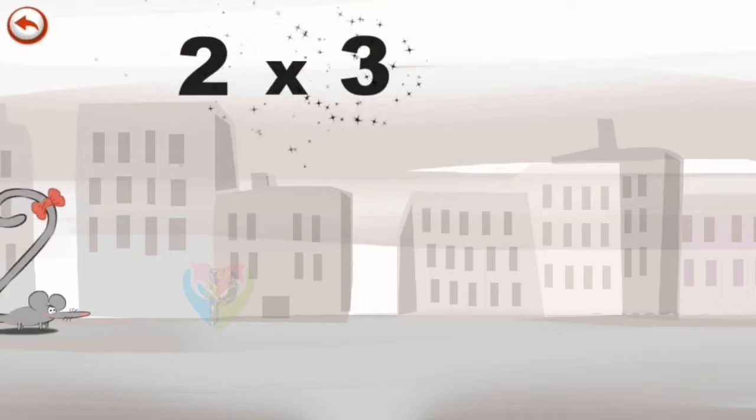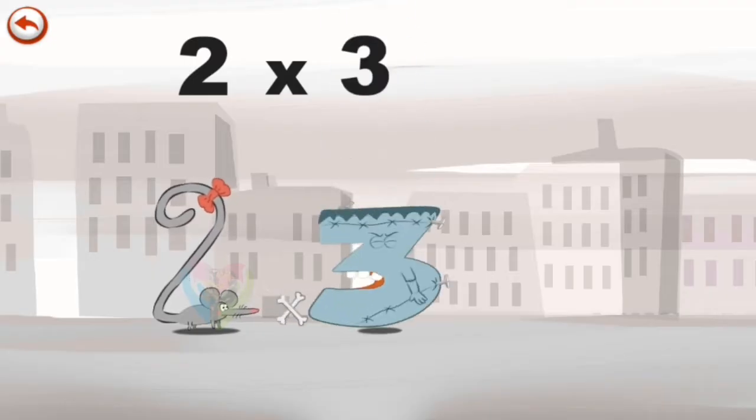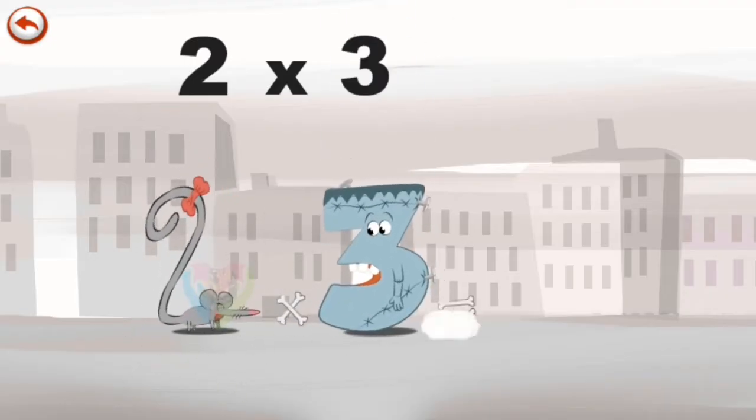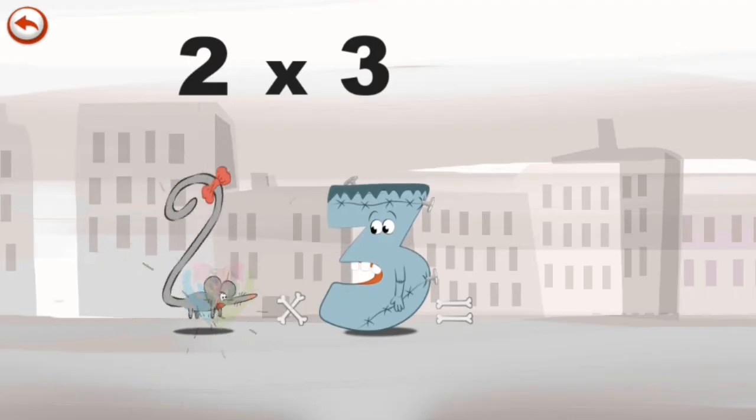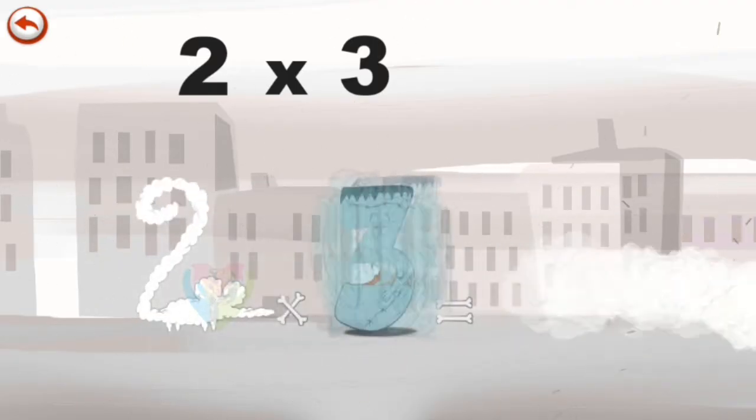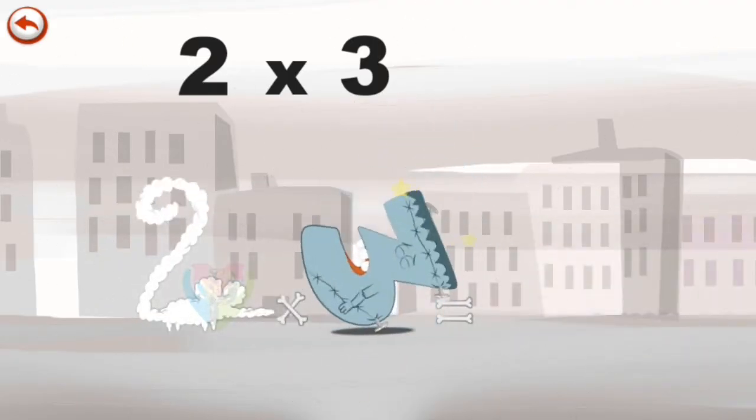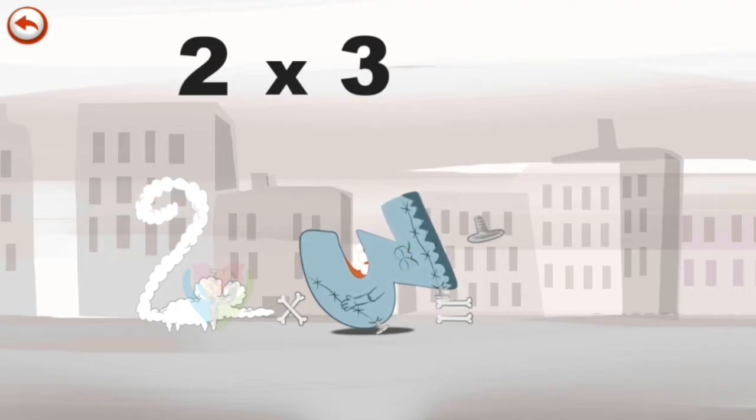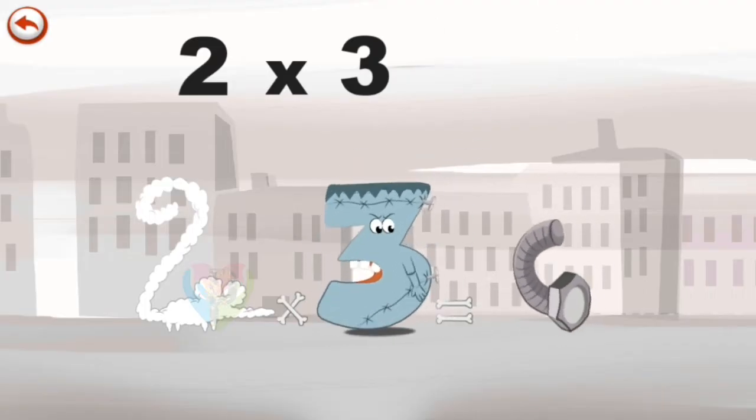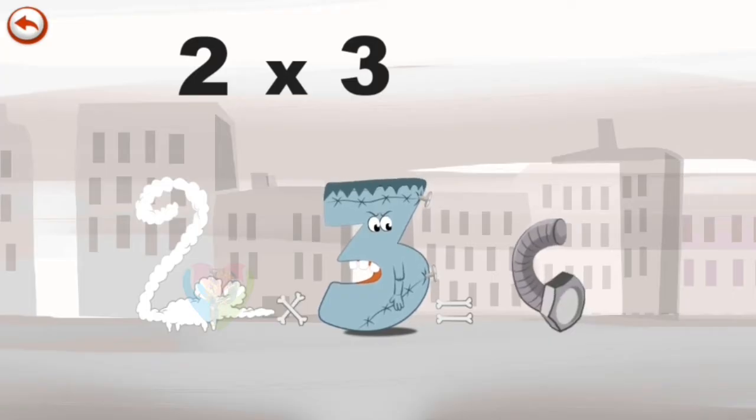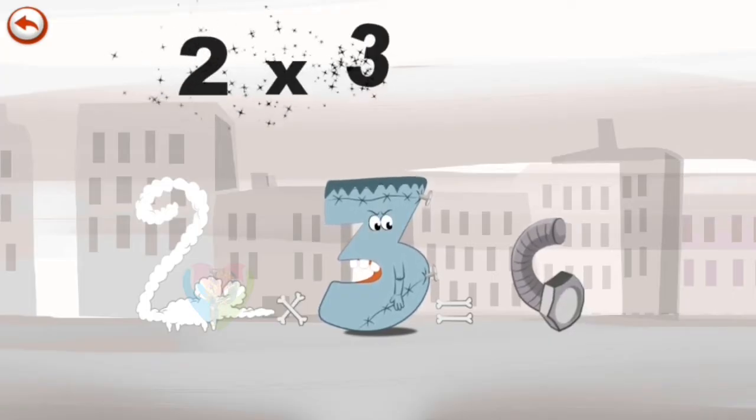What's the story of 2 times 3? When the mouse Two Squeaks sees Thrikenstein the monster right in front of her, she panics. She runs away and pushes Thrikenstein as she goes. He falls backwards and a bolt falls out of his head. The twisted bolt takes the shape of a 6. 2 times 3 is 6.